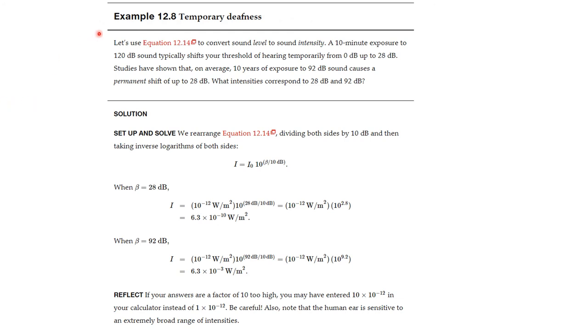Let's look at another example, the title of which is Temporary Deafness. We're going to convert sound level to sound intensity. A 10 minute exposure to 120 dB sound typically shifts your threshold of hearing temporarily from 0 dB to 28 dB. You really can't hear very well after such a concert, for example. Studies have shown that on average, 10 years of exposure to 92 dB sound causes a permanent shift of up to 28 dB. What intensities correspond to 28 dB and 92 dB?